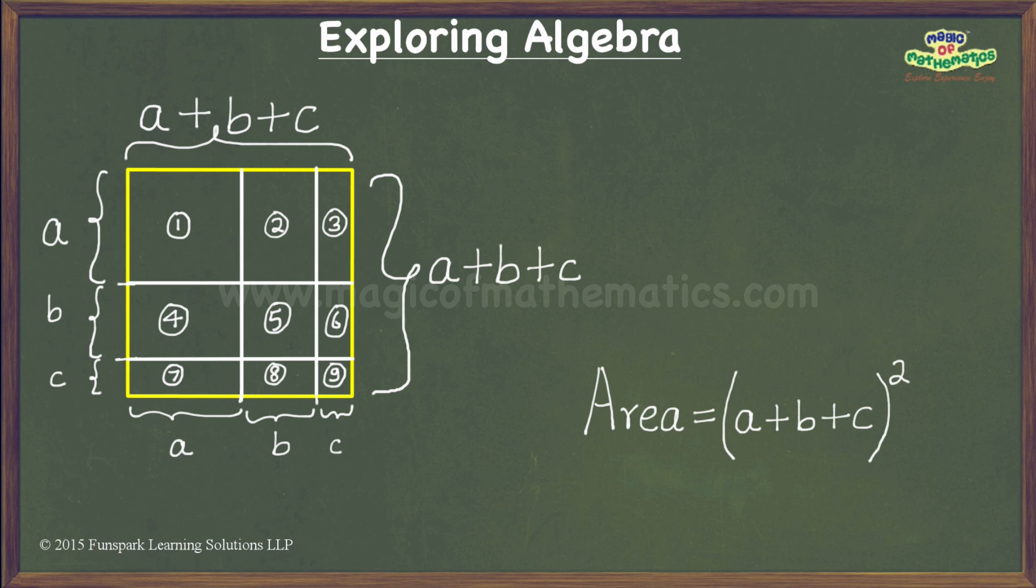We can see that each of these pieces is either a rectangle or a square. Let us now examine these smaller pieces and write down their areas.